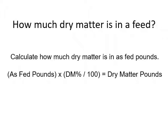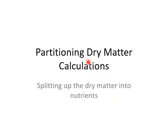Last week we talked about how much dry matter to feed, and we're going to extend this concept this week. Last week we took the as-fed pounds and multiplied by the dry matter percentage to get dry matter pounds. Now what we want to do is split up those dry matter pounds into nutrients. We're going to partition the dry matter, and these calculations are going to split up the dry matter into groups of nutrients that are significant by weight.